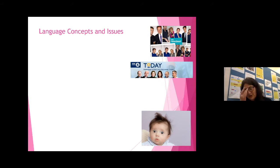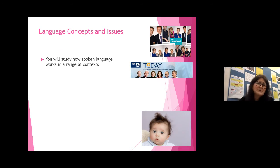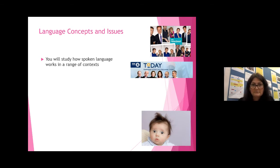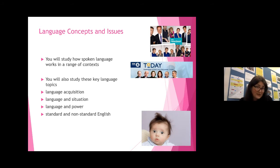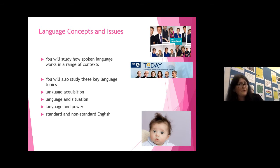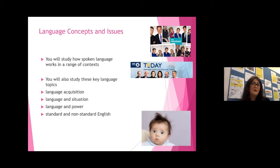What do we study on the English language A-level? We start off by looking at concepts and issues in spoken language — how spoken language works in a range of contexts, such as political interviews, documentaries, or reality television shows. We also study key language topics: acquisition, situation, power and non-standard English. Unlike at school, we don't study set texts for exams — instead you do analysis of unseen texts, applying skills learned about different genres and language topics in the exam.